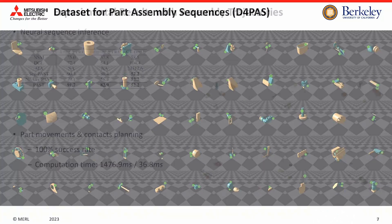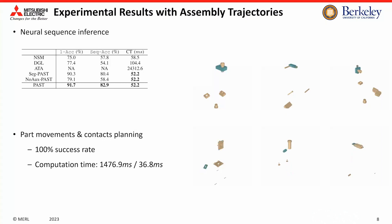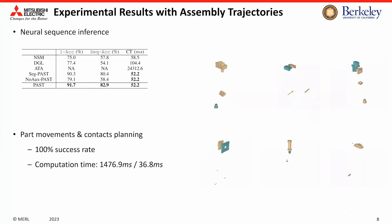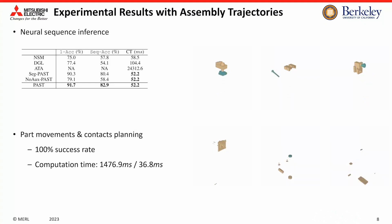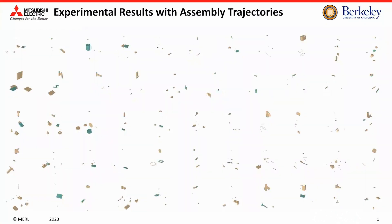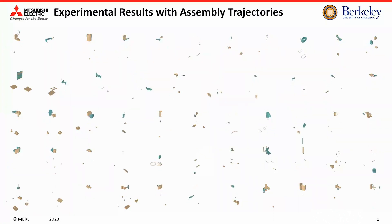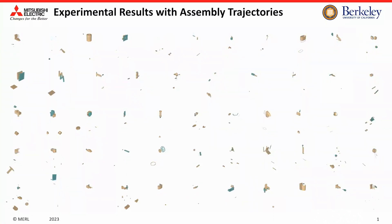With our multi-level approach — neural inference, motion planning, and contact point optimization — our algorithm generates complete assembly paths more accurately and efficiently than previous methods. Additional assembly examples are shown here.